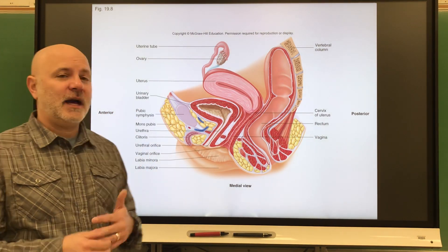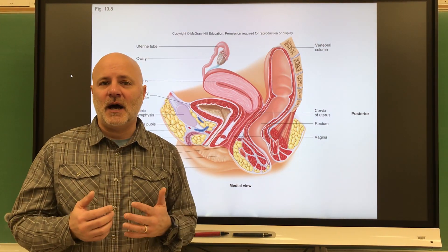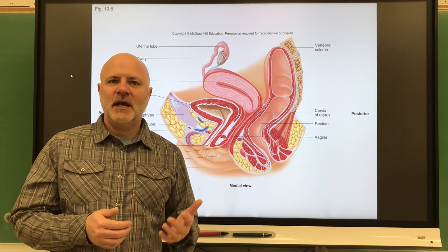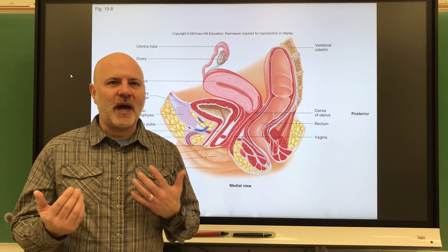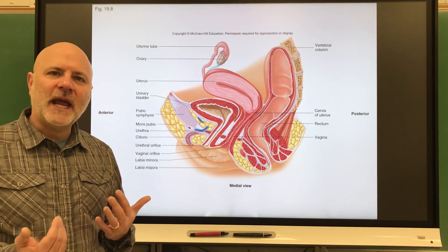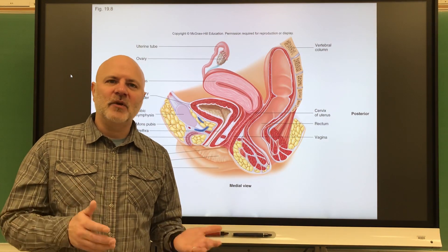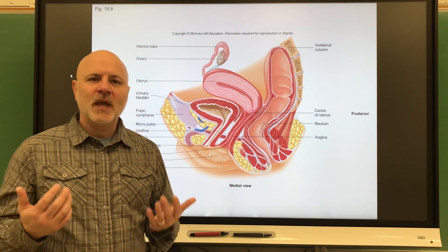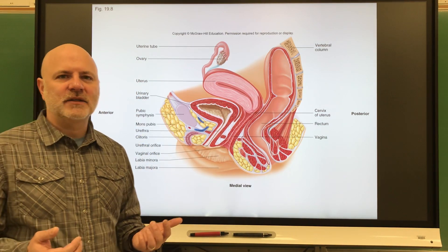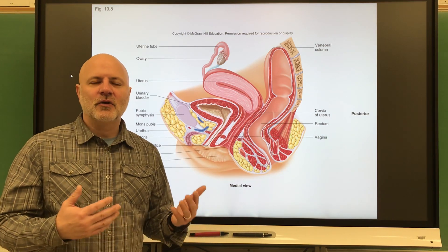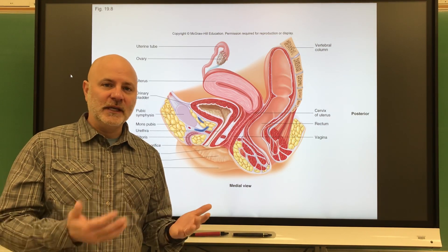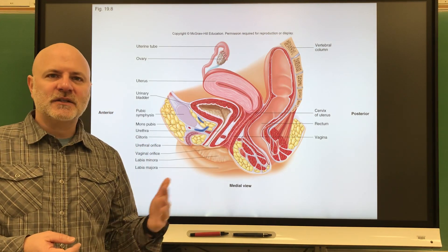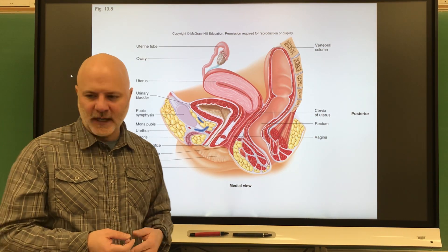Unlike guys, females are born with as many eggs, or oocytes — which are immature eggs — as they're ever going to have. You have about a million at birth, but more than half will degenerate by puberty, leaving about 400,000. Of those 400,000 oocytes, you're only going to ovulate — release from the ovary — about 400 to 500 over your lifetime, and then a smaller percentage of those will be fertilized.